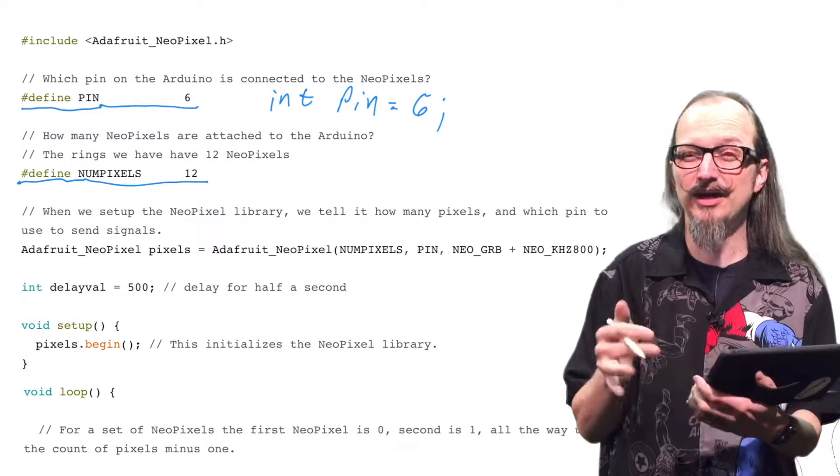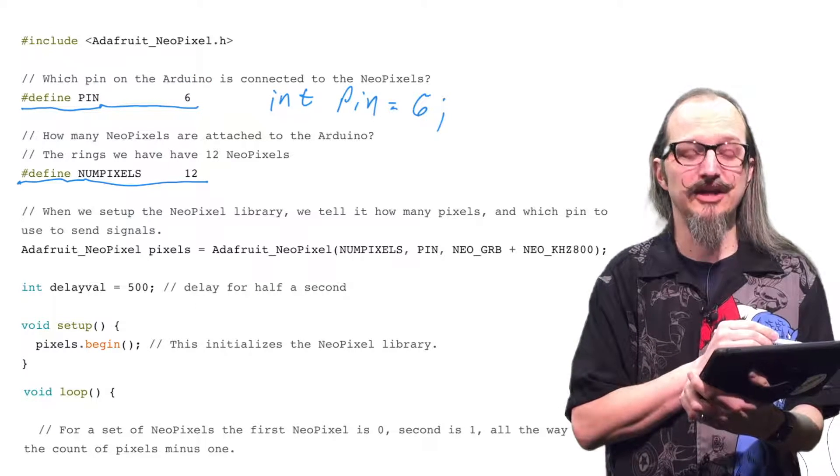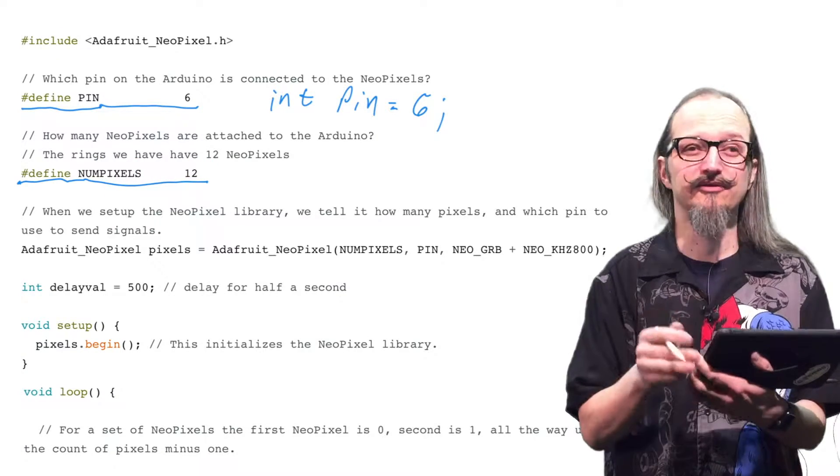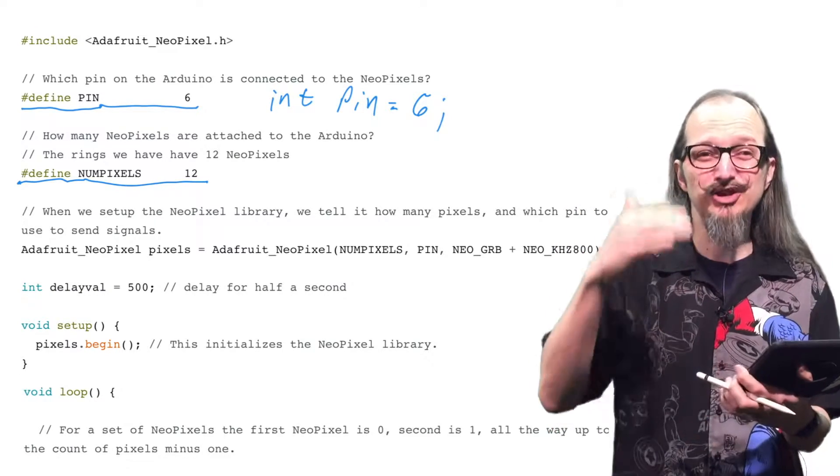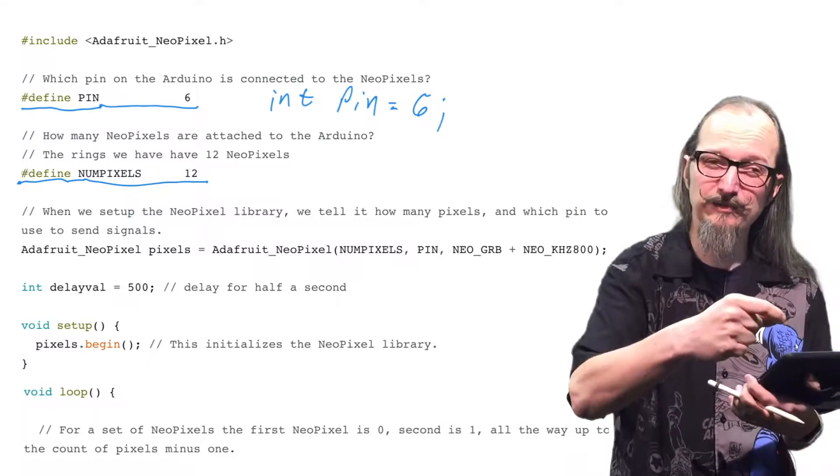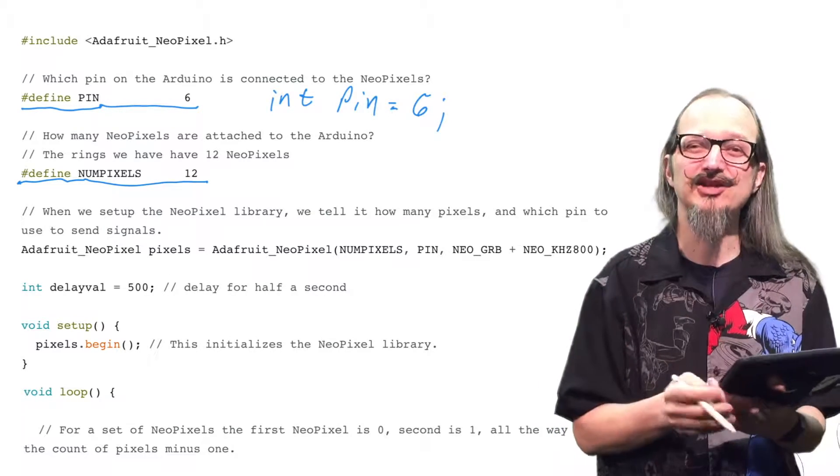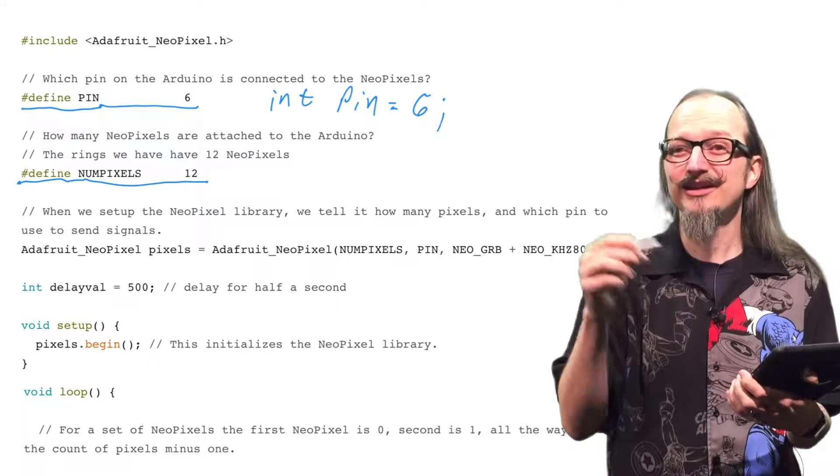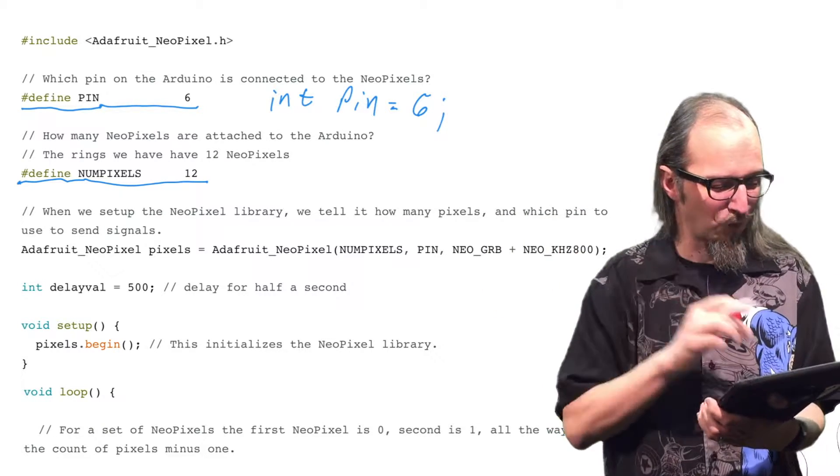So this is saying define the constant PIN and give it a value of six. And then we're saying define the constant NUMPIXELS as 12. In this case, we're doing 12 because our NeoPixel ring has 12 pixels. Now, we don't want to ever change the value of pin or numpixels because our physical NeoPixel is always going to be plugged into pin six once we start our program. And our ring only has 12 pixels. So that's why we're using the hashtag define. You could, if you wanted to, say int pin equals six and int numpixels equals 12 and use them just as well as long as you don't change the value of those. So that's the one change we had to see.